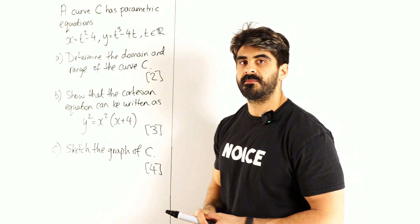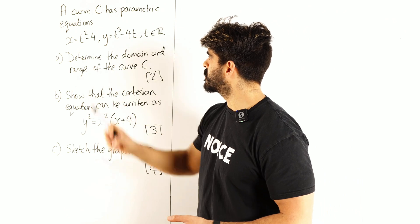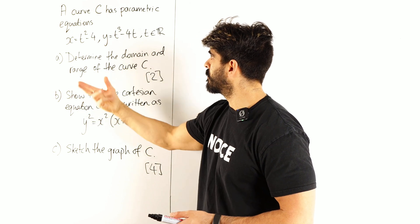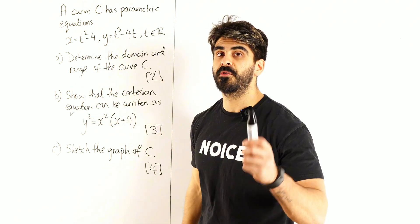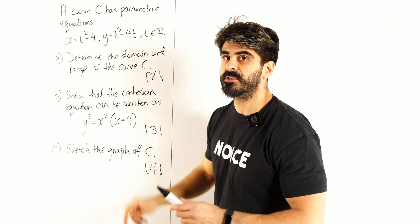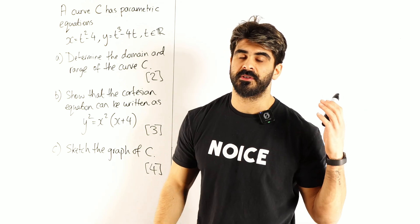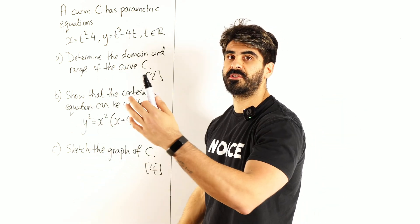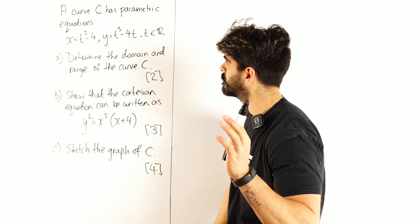Okay, so we know that the domain is to do with the x value, and the range is to do with the y values. So they both depend on t. It says t is an element of the real numbers, meaning t can be anything on the real plane. So it can be whole numbers, negative numbers, fractions, pi, you name it.